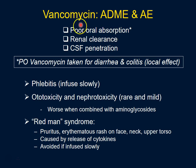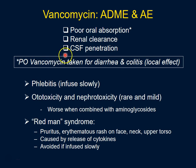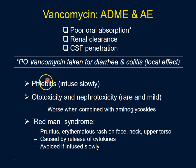Vancomycin has poor oral absorption. However, oral vancomycin is sometimes used specifically for the treatment of diarrhea and colitis caused by Clostridium difficile — in that case it is used for its local effect, not systemic absorption. It is cleared by the kidneys and has some CSF penetration, which can be useful. One adverse effect is phlebitis, which occurs with rapid infusion; a slow infusion rate minimizes this.